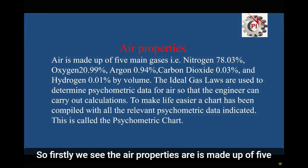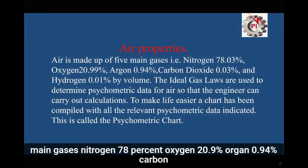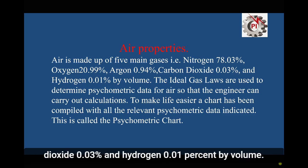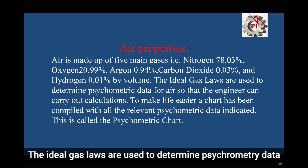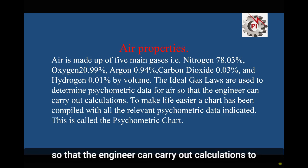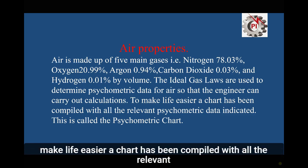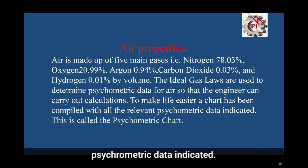Air is made up of five main gases: nitrogen 78%, oxygen 20.99%, argon 0.94%, carbon dioxide 0.03%, and hydrogen 0.01% by volume. The ideal gas laws are used to determine psychrometric data for air so that the engineer can carry out calculations. To make life easier, a chart has been compiled with all the relevant psychrometric data — this is called the psychrometric chart.